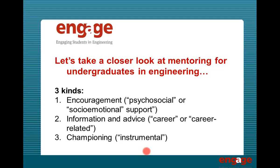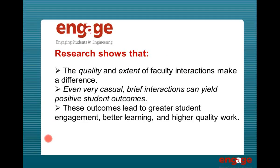How can we move beyond intensive mentoring but still get some of the benefits? Looking at the components of mentoring can be helpful. Research on undergraduate student mentoring identifies three kinds of activities: one is encouragement — what psychologists call psychosocial or socio-emotional support, or what we might call plain old cheerleading. Another is information and advice, sometimes called career-related. And a third is championing or instrumental mentoring — the kind you provide when you write a letter of recommendation or nominate a student for an award.